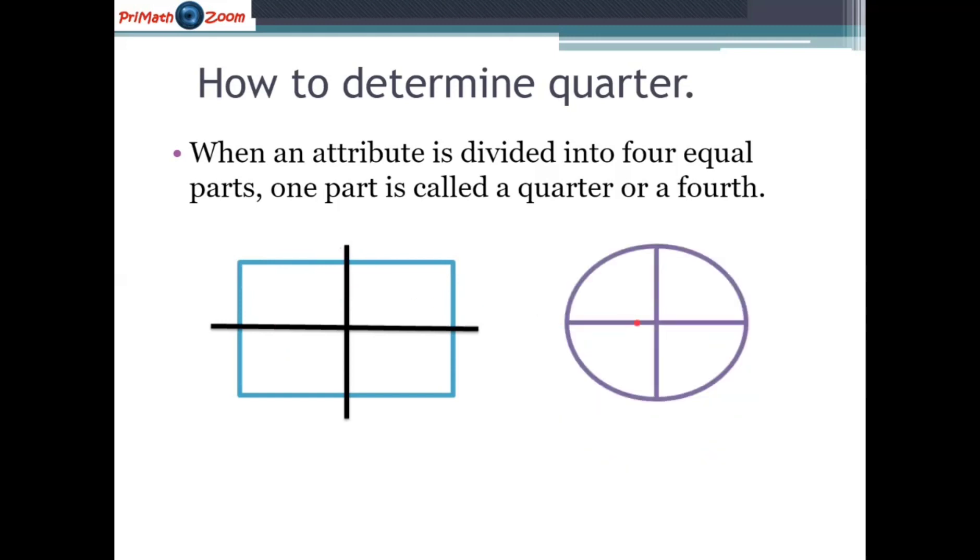Another attribute divided into four equal parts. One, two, three, four. And can you guess? Yes. One part is called a quarter or a fourth.